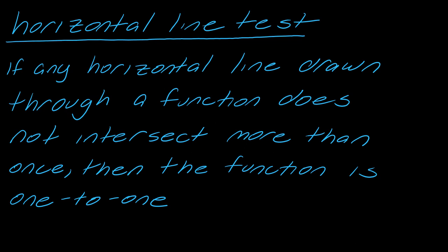So if any horizontal line can be drawn through a function, if any horizontal line drawn through a function does not intersect more than once, then the function is one-to-one. So here's the one thing I want to just caution you on. You have to have a function before you can determine this horizontal line test.